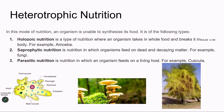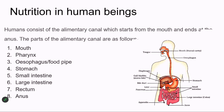Next we move on to nutrition in human beings. Digestion in human beings is carried out in the alimentary canal, also known as the digestive tract. It is called a digestive tract because food travels from one point to another. The first part where food enters is the buccal cavity — the mouth — which has teeth and tongue.